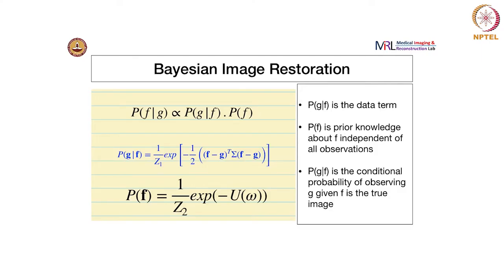Hello and welcome back. In this video we will talk about Bayes and image restoration. So far we have looked at methods like linear filtering, boxcar averaging, and bilateral filtering.